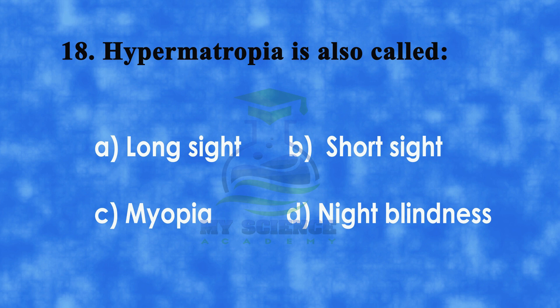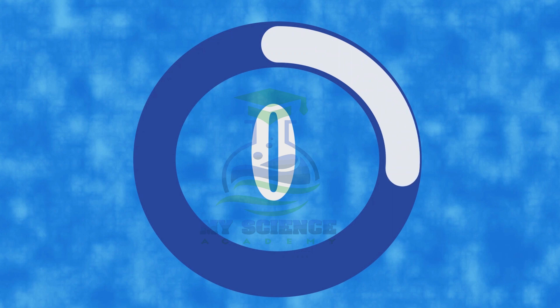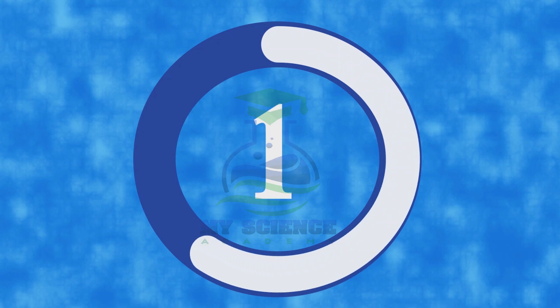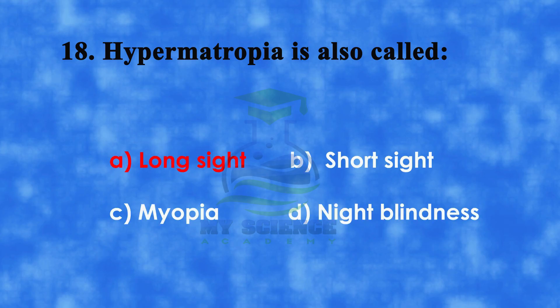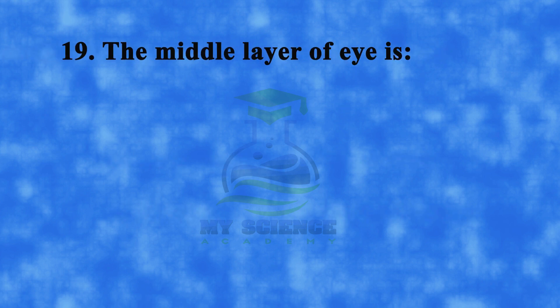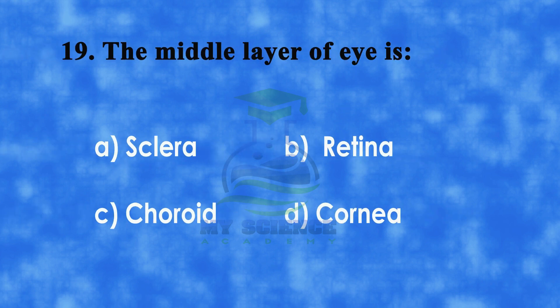Number 18: Hypermetropia is also called. A: long sight, B: short sight, C: myopia, or D: night blindness. And correct answer is A: long sight.